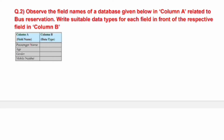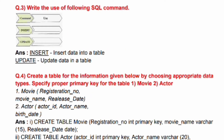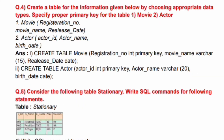Question No. 3: The second command is UPDATE. Use case: update data in a table. Question No. 4: Create a table for the information given below by choosing appropriate data types. Specify a proper primary key for the table. Fields include: 1. Movie, 2. Actor.